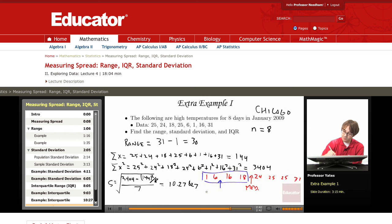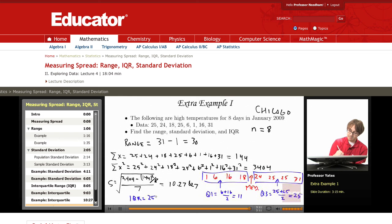6 plus 16 divided by 2 is 11. My upper half of the data are these four observations, so I'm taking the average of those middle two: 25 plus 25 divided by 2, which gives me 25. The interquartile range is going to be 25 minus 11 or 14.